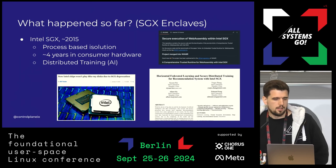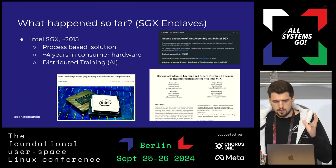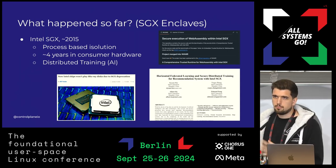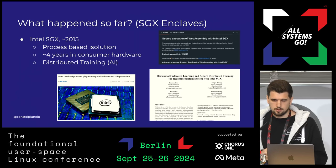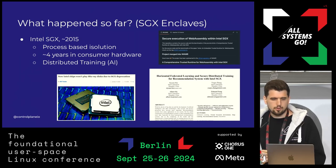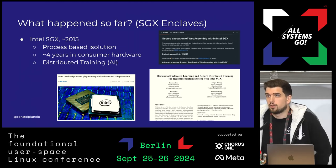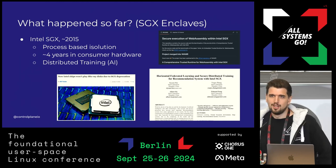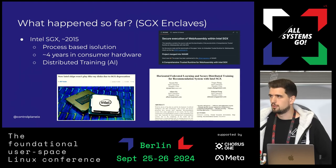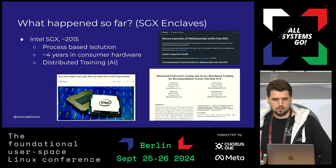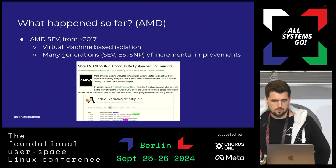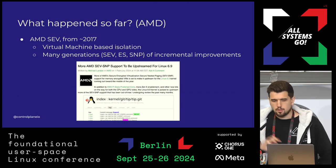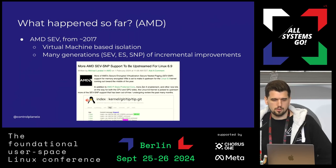In 2015, Intel introduced SGX (enclaves), which is process-based isolation — you take a single process from your operating system and move it into a memory-encrypted environment. This provides the benefit of a very limited trusted computing base, but comes with downsides: you no longer have an operating system, which usually requires you to recompile your whole application, use different SDKs — very difficult for most folks.